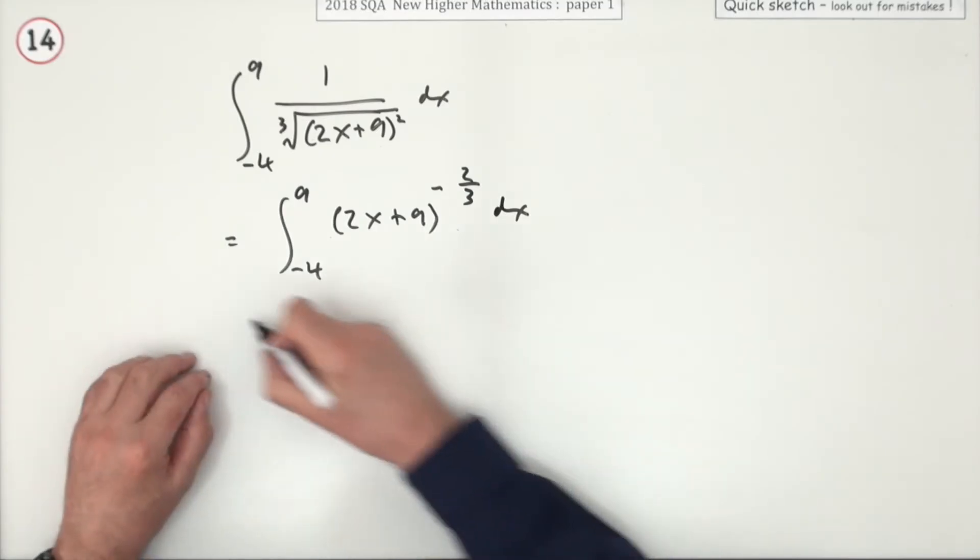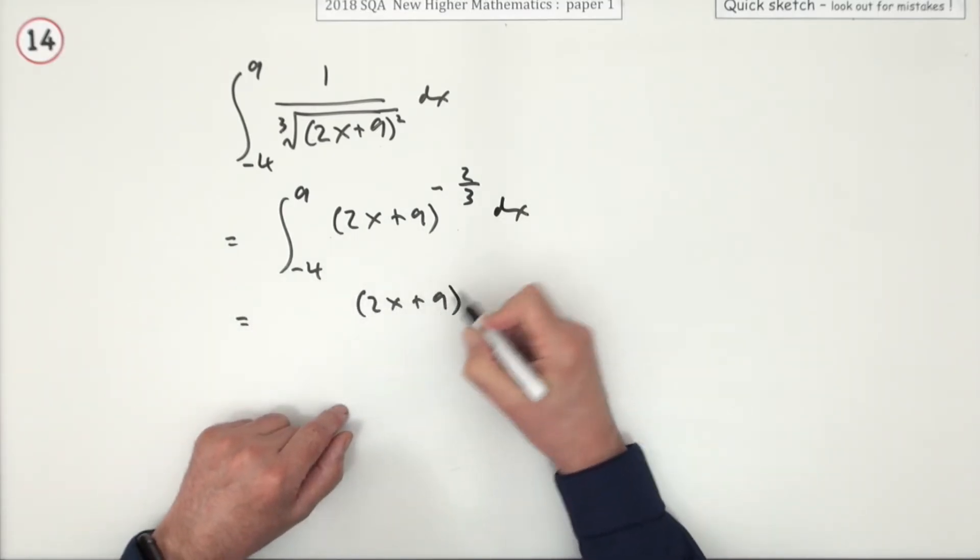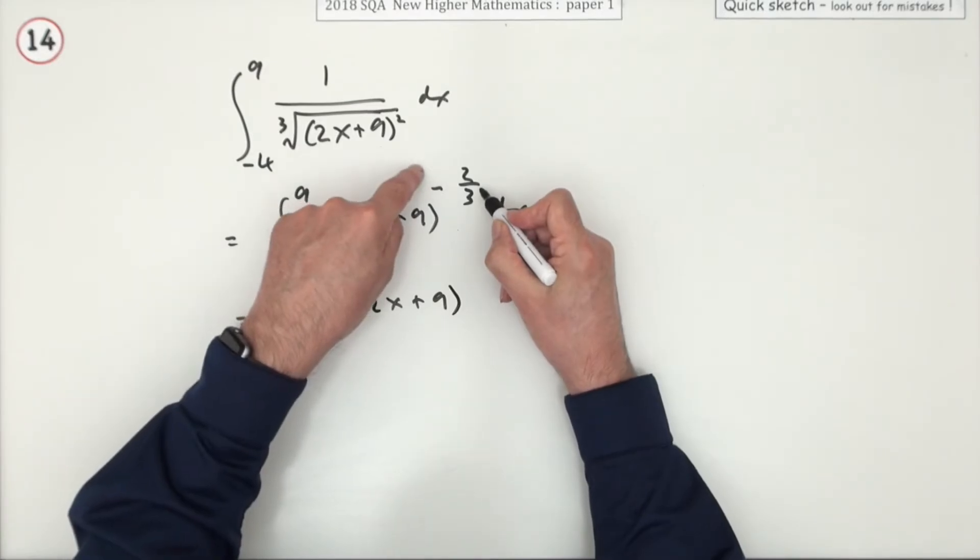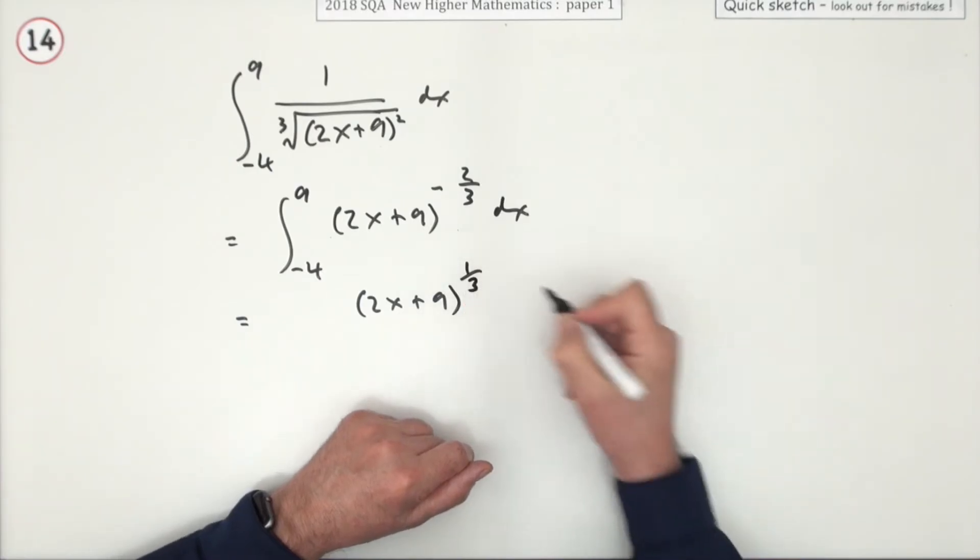That presumably will be the first mark. So what happens when you do this? Well, that stays alone. Add 1 to the power. So negative 2 thirds plus 1, adding on 3 bits, puts up to power a third.